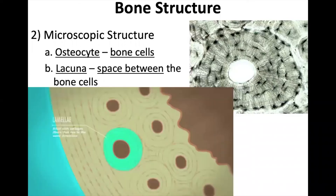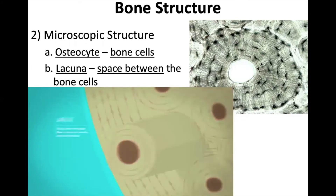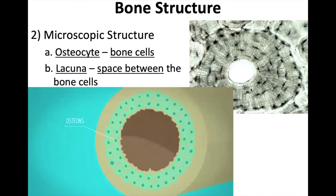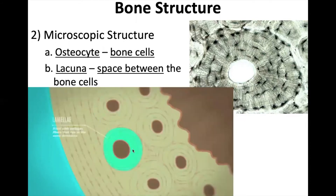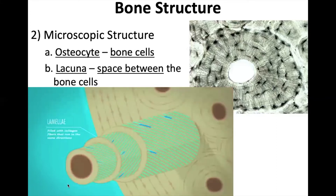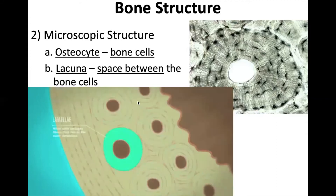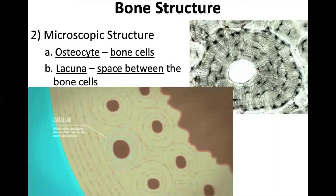Because the bone cells — the osteocytes — are in a circular pattern, the bone material forms in a circular pattern. Three-dimensionally, if we were to pull one of these circles out, it's actually a cylinder of bone material. Your bones are actually made up of a bunch of these different cylinders called osteons. It's a whole bunch of osteons fused together for extra strength.